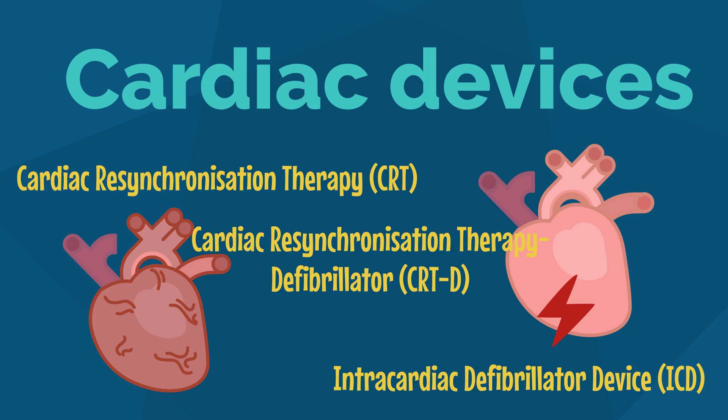ICDs are implanted in the right ventricle of patients at high risk of sudden cardiac death due to heart arrhythmias. When patients have a life-threatening arrhythmia, the ICD delivers an electric shock to help restore a regular heartbeat. A CRT-D differs from an ICD in that it has a second electrode over the left ventricle of the heart to help synchronize the patient's heartbeat and improve cardiac function.